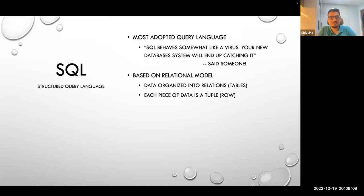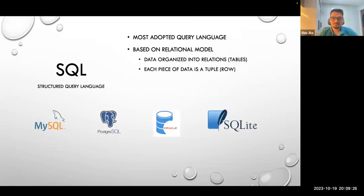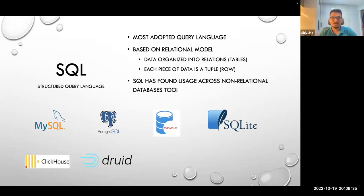If you typically look at SQL from the conventional point of view, its connotation is related to relational database models where data is organized into different tables. You also have relations, and each piece of data is a row in the database. Examples include MySQL Server, Postgres, Oracle, or SQLite — which is an embedded one, still a SQL database, and probably one of the most used given all the smaller tools, IoTs, phones and such use SQLite.